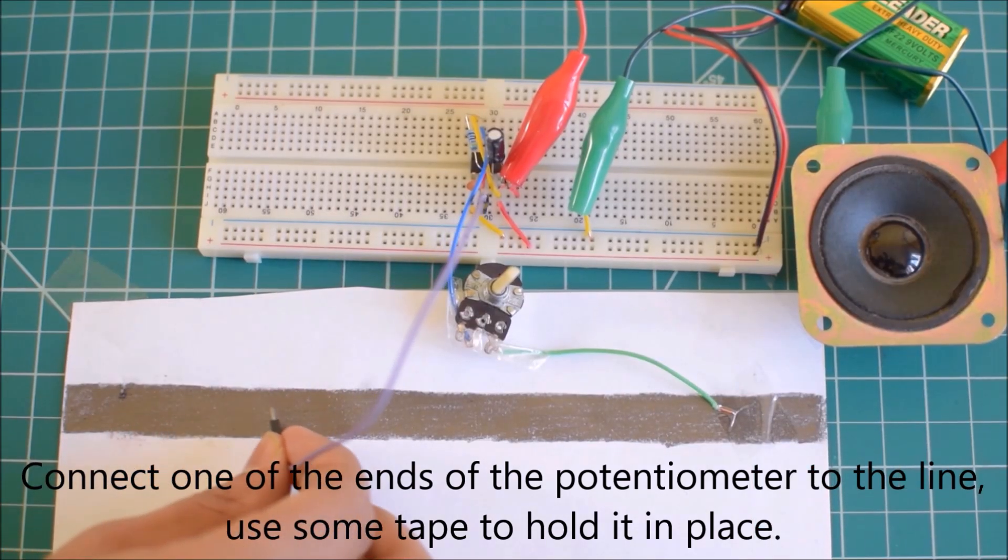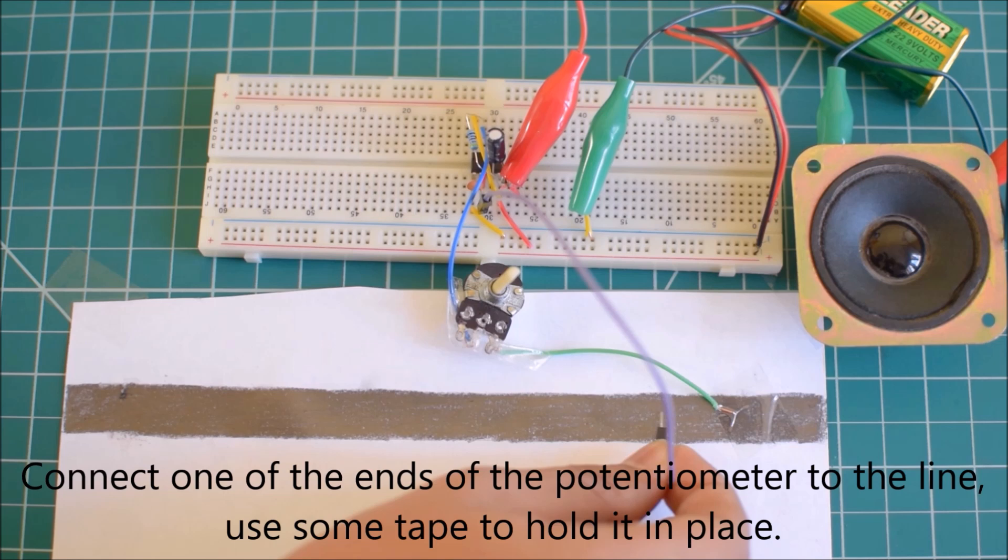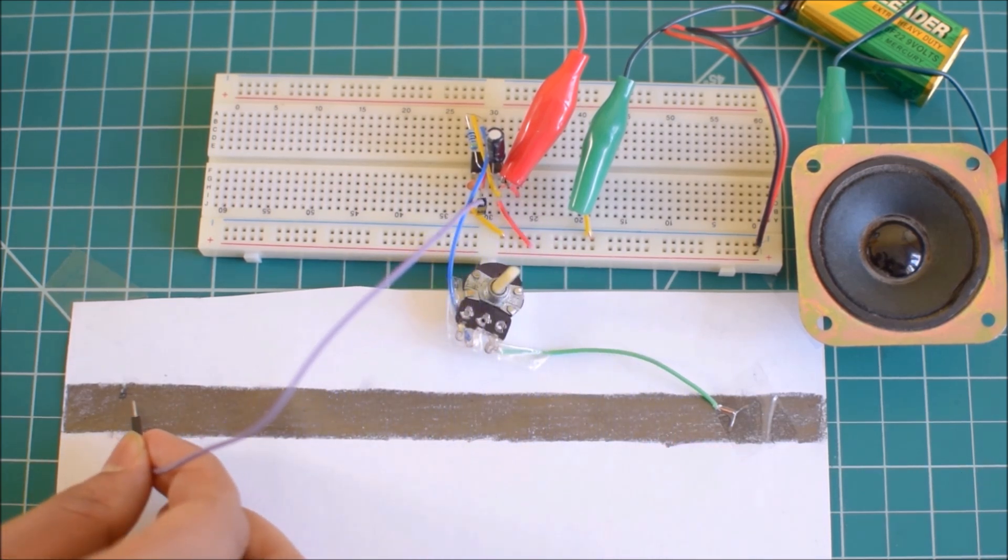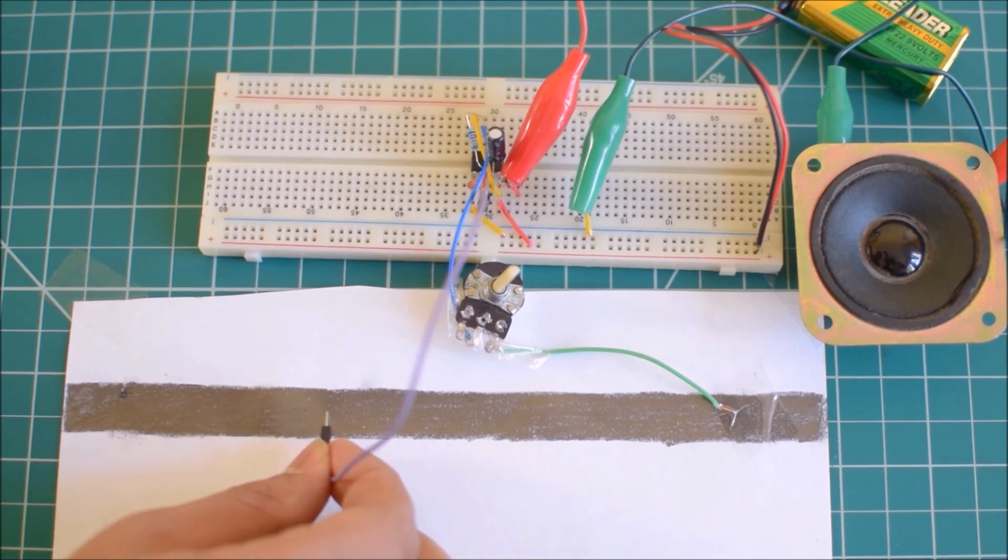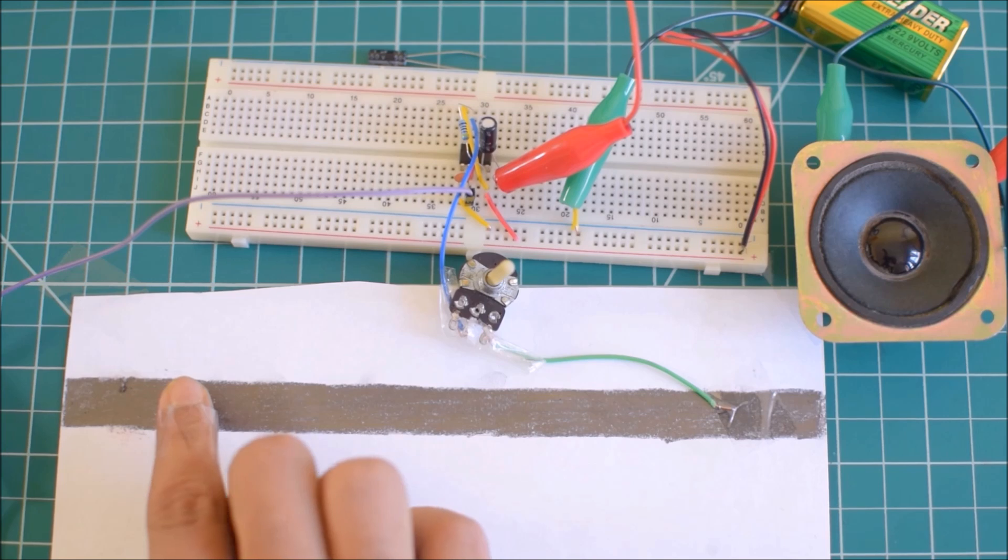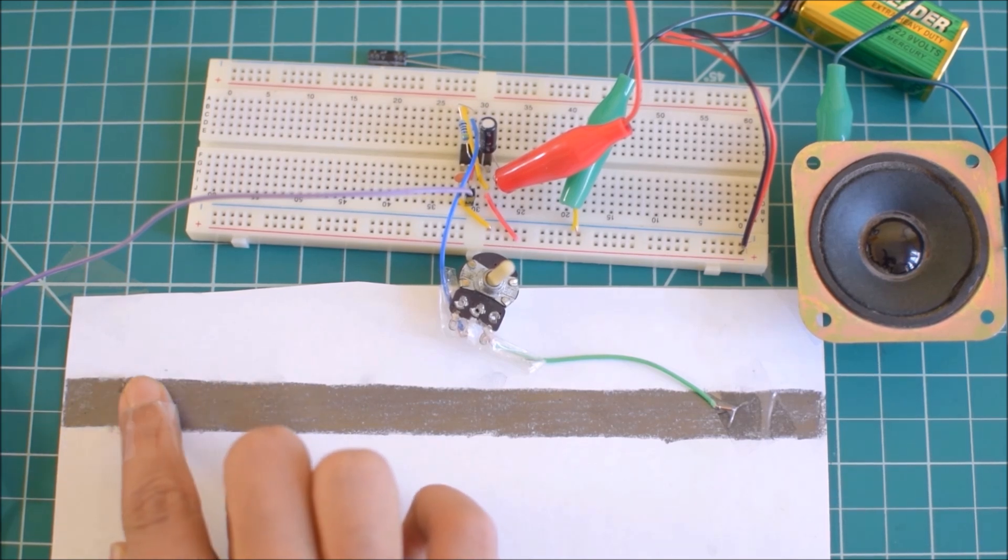Now take the free wire and touch it on the shaded portion of the paper. You should get a buzzing noise. Move it around the shaded area and you should see a frequency change in the noise. By changing the portion where you touch the wire, you can change the noise.